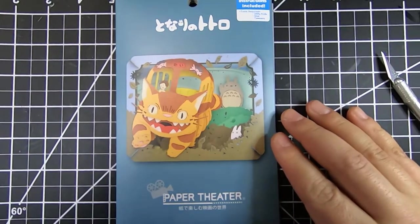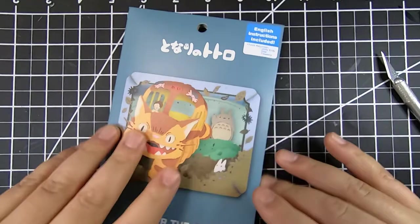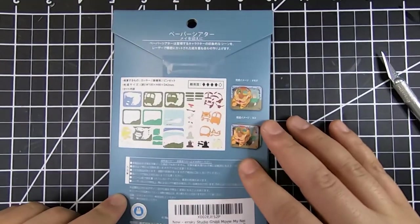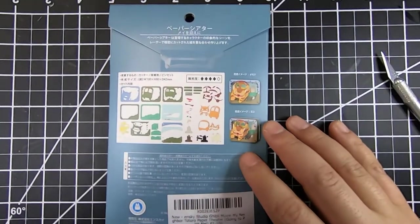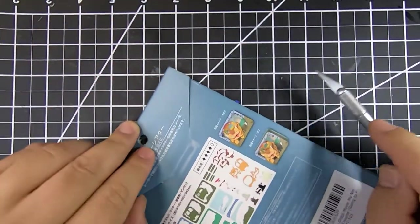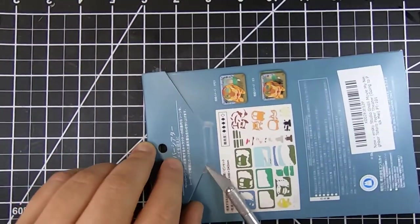Welcome back everyone. Today we're going to be working on N-Sky's paper theater, and this one's going to be Totoro. The model number for this one is PT-101 and the English title is Going to Pick Up Main.